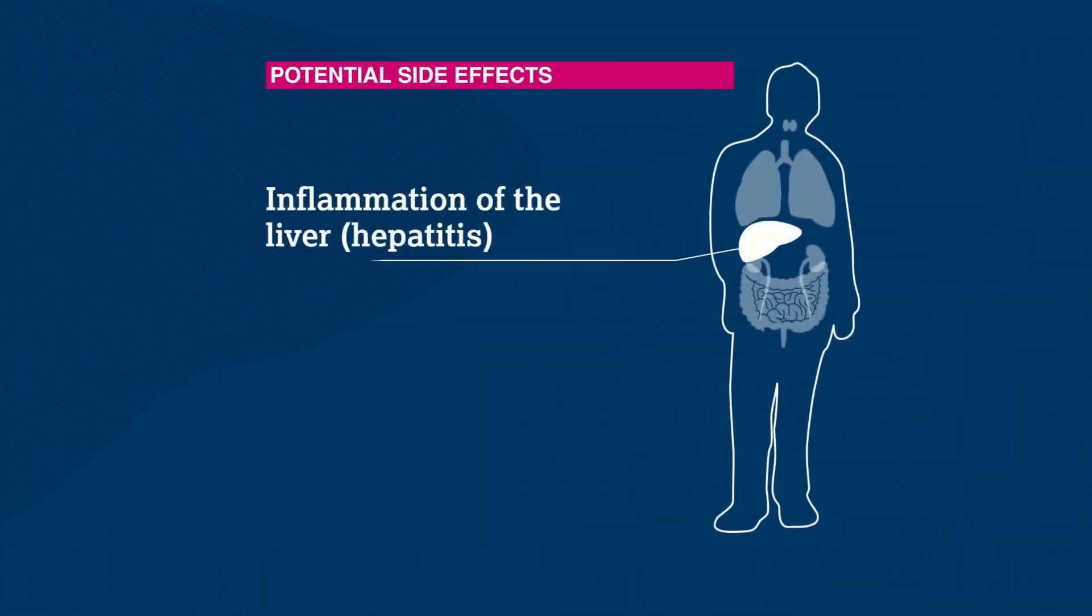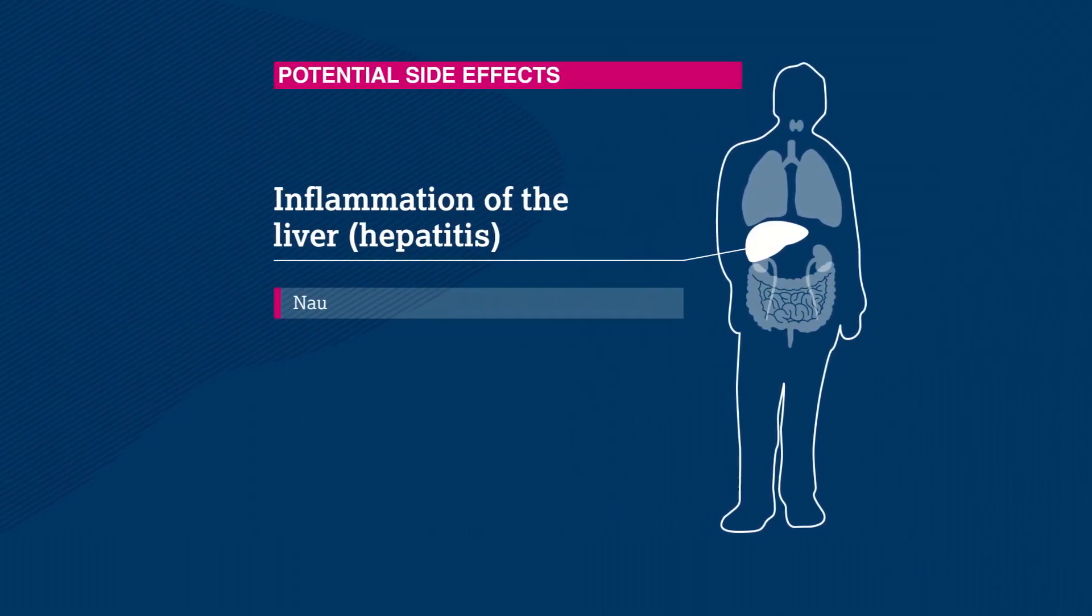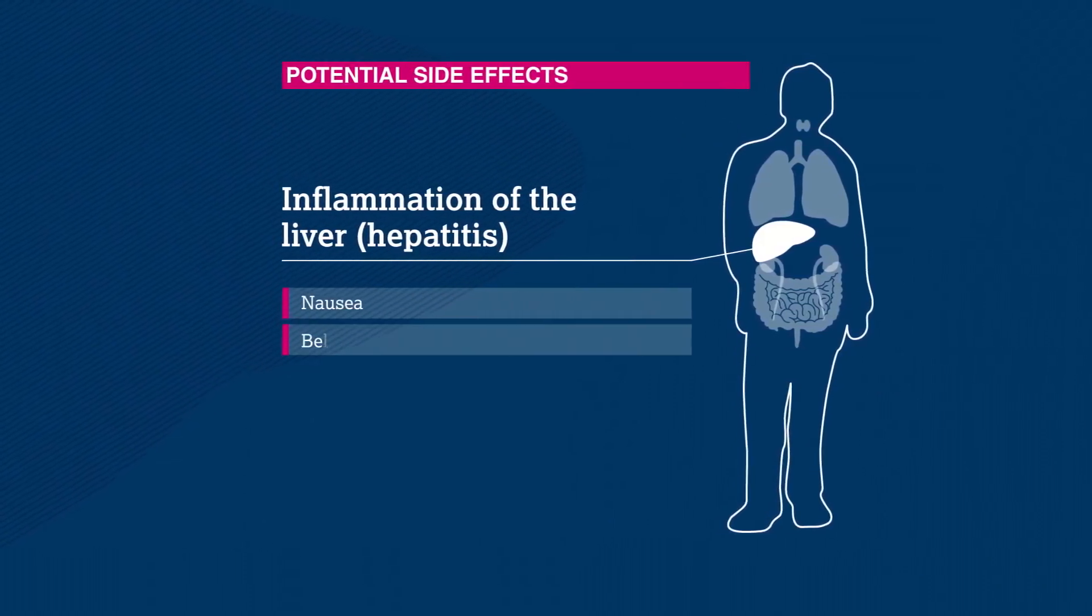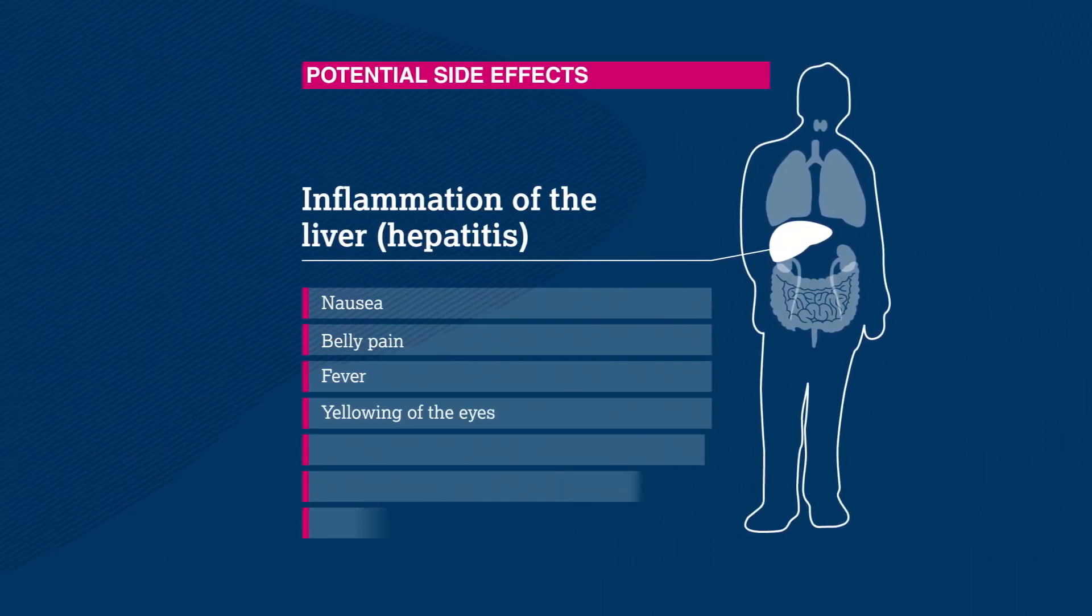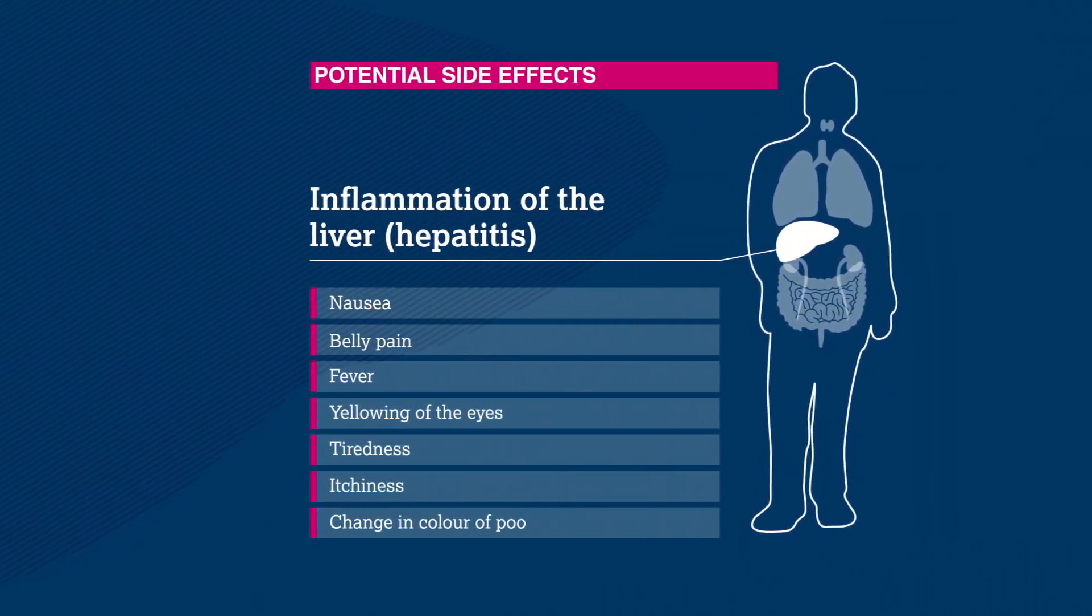The liver may also be affected, making patients feel like throwing up or causing belly pain. This can also cause fever, yellowing of the eyes, and a few of the other symptoms we've mentioned.